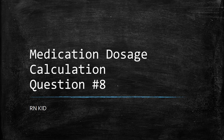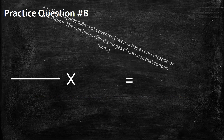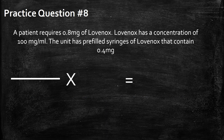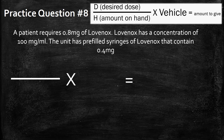Medication dosage calculation question number eight. A patient requires 0.8 milligrams of Lovenox. Lovenox has a concentration of 100 milligrams per milliliter. The unit has pre-filled syringes of Lovenox that contain 0.4 milligrams. So how much are you going to give this person in order to achieve what's ordered?